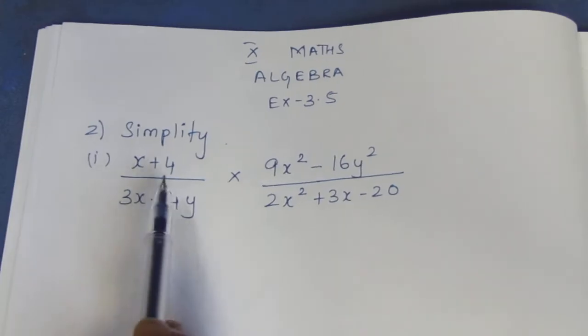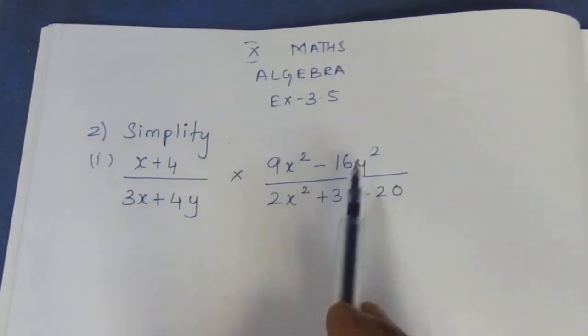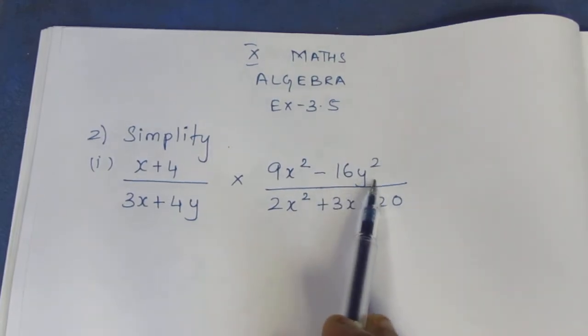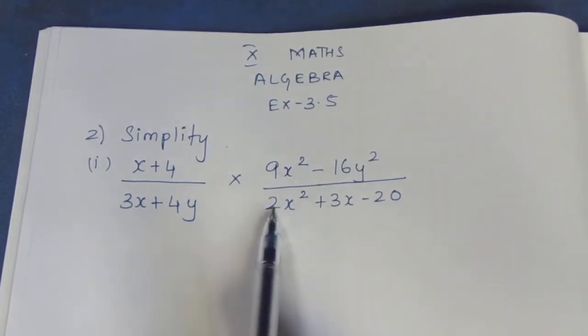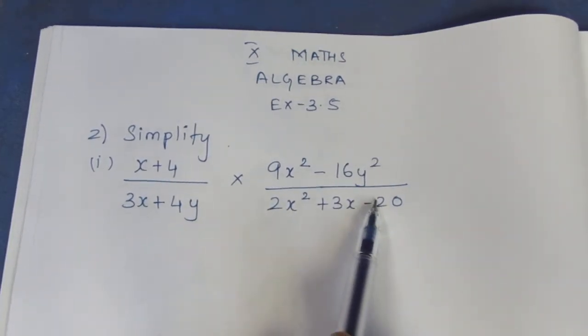Simplify (x plus 4) by (3x plus 4y) into (9x square minus 16y square) by (2x square plus 3x minus 20).